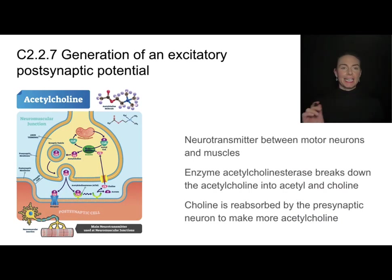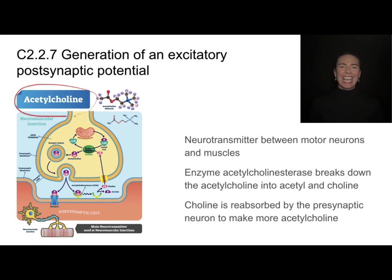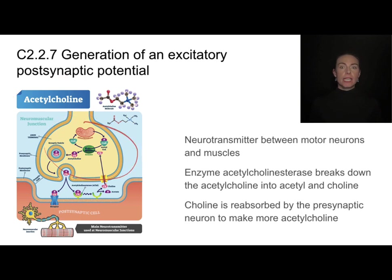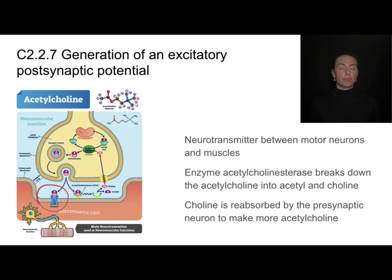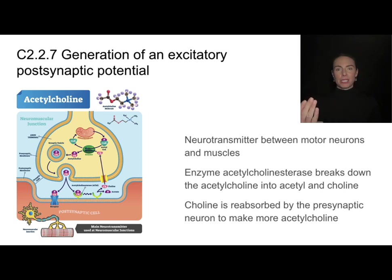Let's look at an example. Acetylcholine is a neurotransmitter you'll hear about in many topics — it is responsible for carrying messages between neurons and muscles, making it a muscle contraction neurotransmitter. When acetylcholine binds to a post-synaptic cell on that muscle, it gives the message to contract. But we don't need that message all the time.